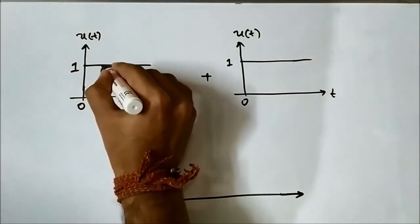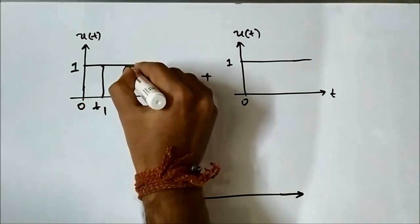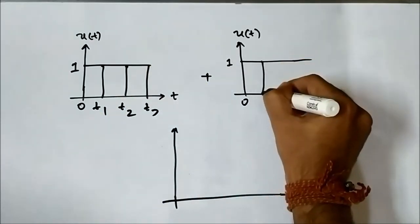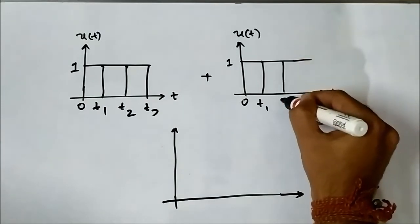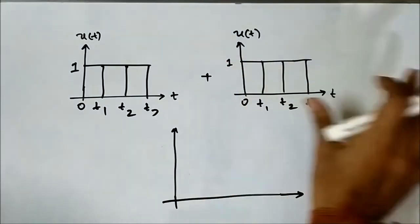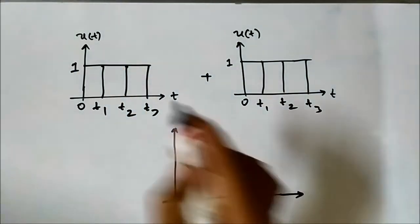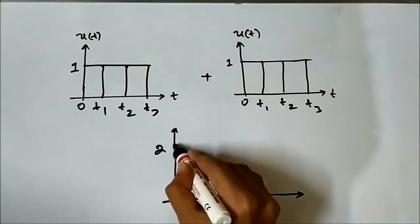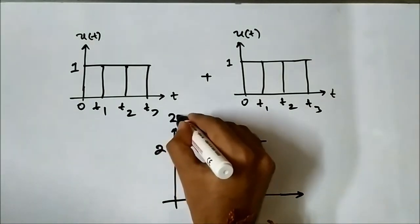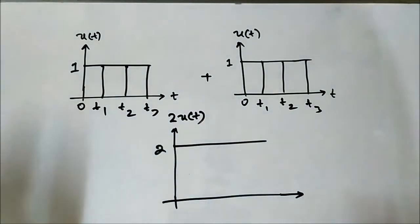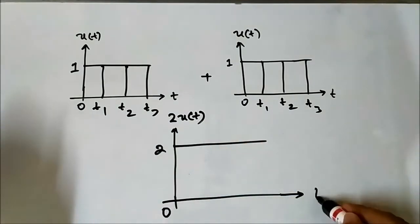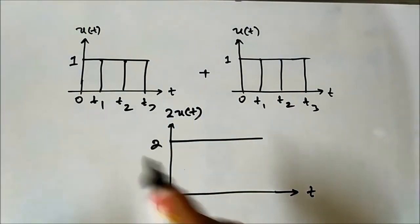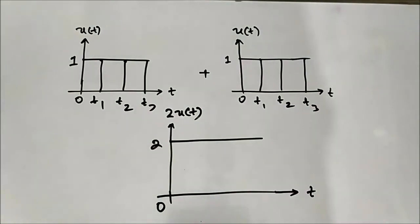At each time interval — let us say t1, t2, or t3 up to tn — the value of the signal is constant 1. So at each point it will be 1 plus 1, which equals 2. The resultant signal will be the same as an amplitude scaled signal, so the signal is amplified to 2·u(t).